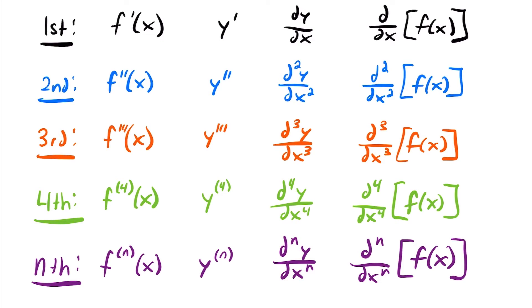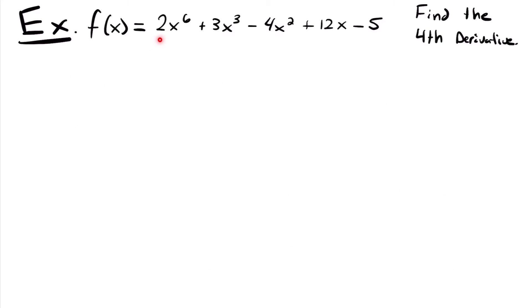Let's take a look at an actual example of taking a derivative of a derivative. Here we have the function f(x) = 2x⁶ + 3x³ − 4x² + 12x − 5, and we want to find the fourth derivative. We're going to be taking a lot of derivatives. You can't skip right from the original function to the fourth derivative — you have to find all the derivatives before the fourth. So let's start by finding the first derivative, f prime of x, by taking the derivative of each term.